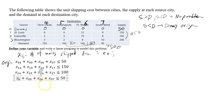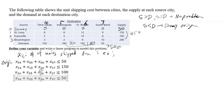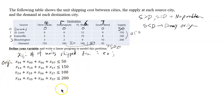Then it's Bloomington — Bloomington to Terre Haute, Bloomington to Indianapolis, and so on. On the right side, it can supply at most 200. So those are the inequalities for the origin.